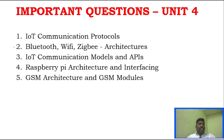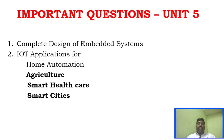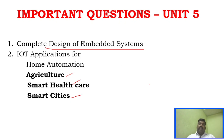In Unit 4, you can learn Bluetooth, Zigbee is very very important, and Wi-Fi. IoT communication protocol, IoT communication module, Raspberry Pi architecture, and GSM architecture — all these are very very important questions. In Unit 5, complete design of an embedded system for Part B, and smart agriculture, healthcare, and smart cities — you have to definitely go through all these applications. Home automation is very important in Unit 5.